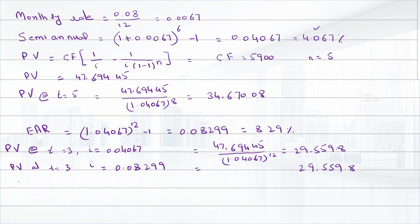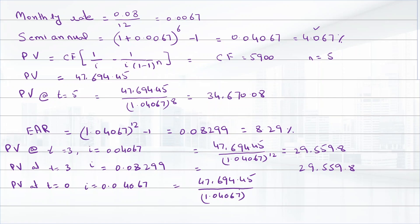We can use both semi-annual and annual compounding and the answers will be the same. For the current value (t = 0), using semi-annual compounding at 0.04067, the present value is 47,694.45 divided by (1.04067) raised to the power of 18, which equals $23,270.92. The present value using the annual discount rate is also $23,270.92.